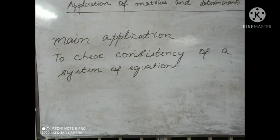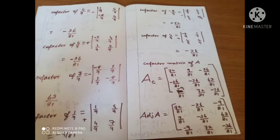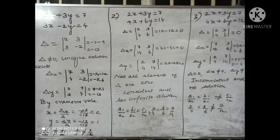What is the system of equations? The system of equations consists of 2 simultaneous equations, 3 simultaneous equations, or 4 simultaneous equations. For 2 simultaneous equations, x and y are equal to a constant. For 3 simultaneous equations, x, y, and z are constant.